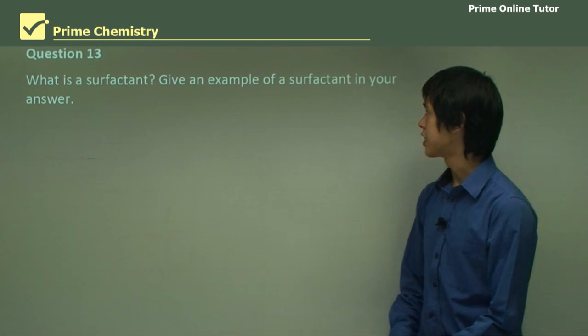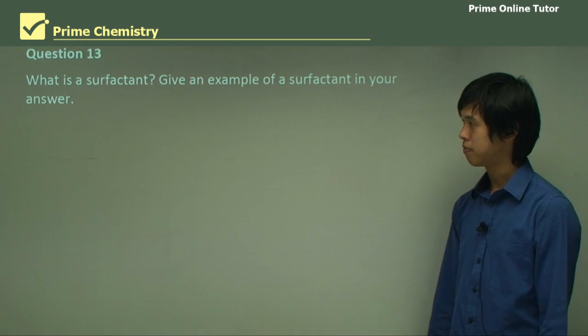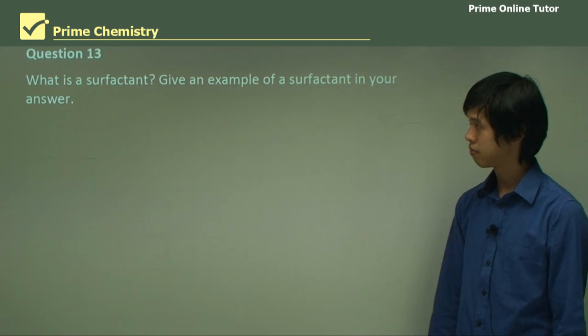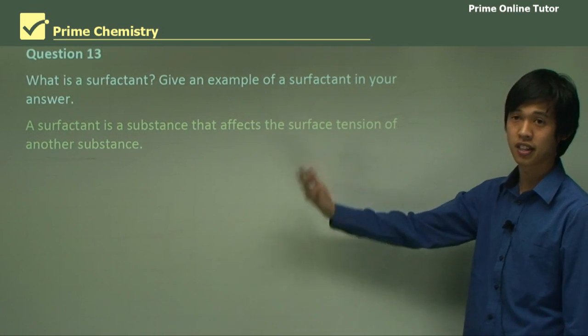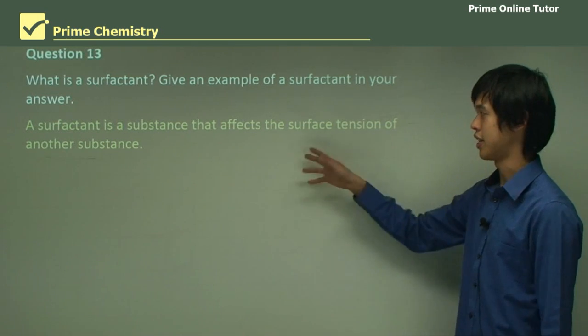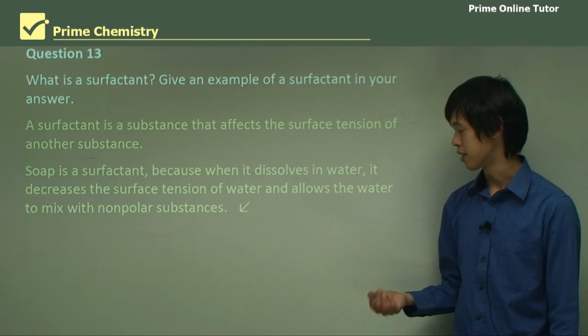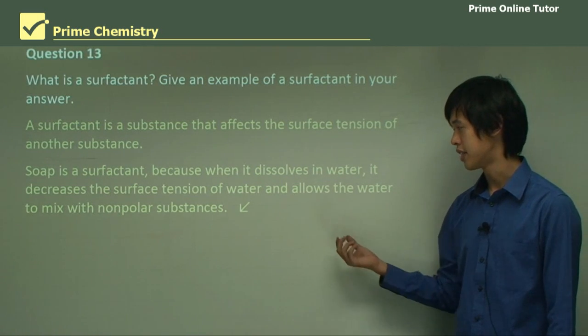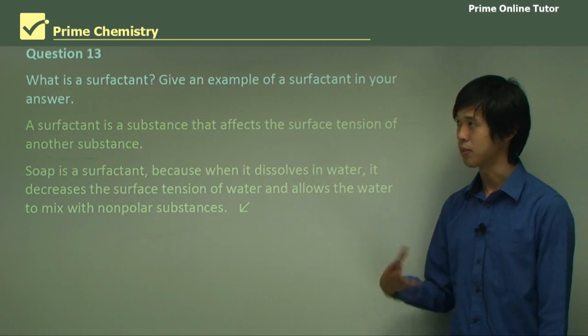What is a surfactant? Give an example of a surfactant in your answer. A surfactant is a substance that affects the surface tension of another substance—it will either increase or decrease the surface tension. Soap is a surfactant because when it dissolves in water, it decreases the surface tension and allows the water to mix with non-polar substances. That's why it's called a surfactant.